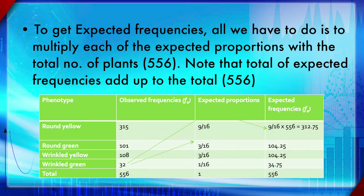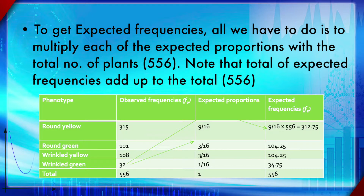The ratio is like odds — you must convert it by dividing by the total to get a proportion. So for a 9:3:3:1 ratio, you divide each value by 16 and multiply by the overall total to get each expected frequency.